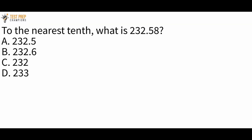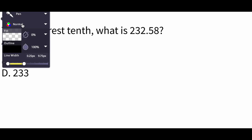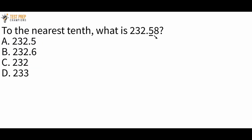To the nearest tenth, what is 232.58? Pause the video and try to figure this out. The first step is to identify the number in the tenths place — that's the 5. Be careful not to confuse this with the number in the tens place, which is 3. Next, look to the number directly to the right of the 5, which is 8. Since 8 is greater than 5, we want to round up.